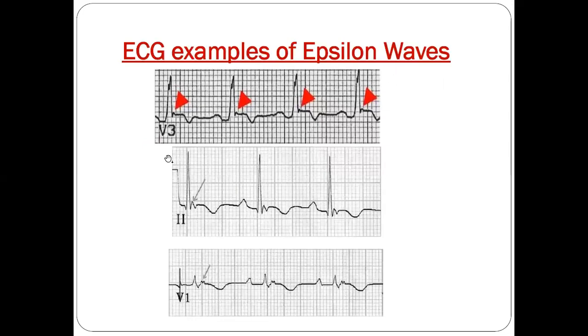Here are examples. After the QRS, if there's a small blip, you can see here also a small blip here and then another blip here. These are all features of what is called epsilon waves.